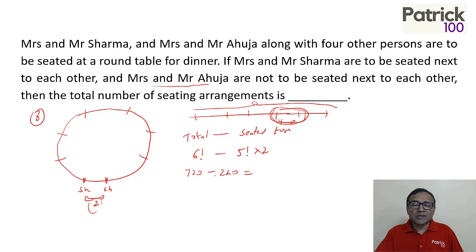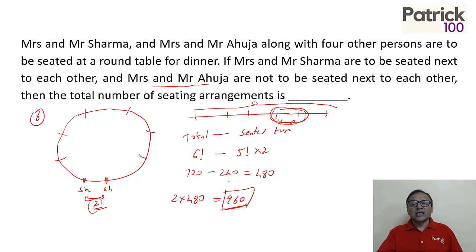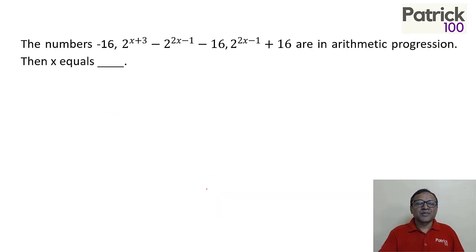If you subtract: 720 minus 240 gives 480. Plus the two ways for the Sharmas, so 2 into 480 gives 960 as the total number of ways. The number of ways Mr. and Mrs. Sharma are not together is 480 ways, and including the two internal arrangements gives 960.